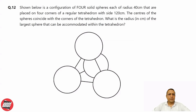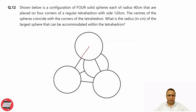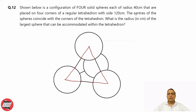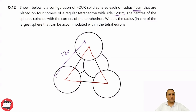In this question, they say: shown below is the configuration of 4 solid spheres, each of radius 40 cm, placed on 4 corners of a regular tetrahedron. The corners of the tetrahedron and the centers of the spheres match with each other. The radius of each sphere is 40 cm and the side of the tetrahedron is 120 cm. What is the radius of the largest sphere that can be accommodated within the tetrahedron?